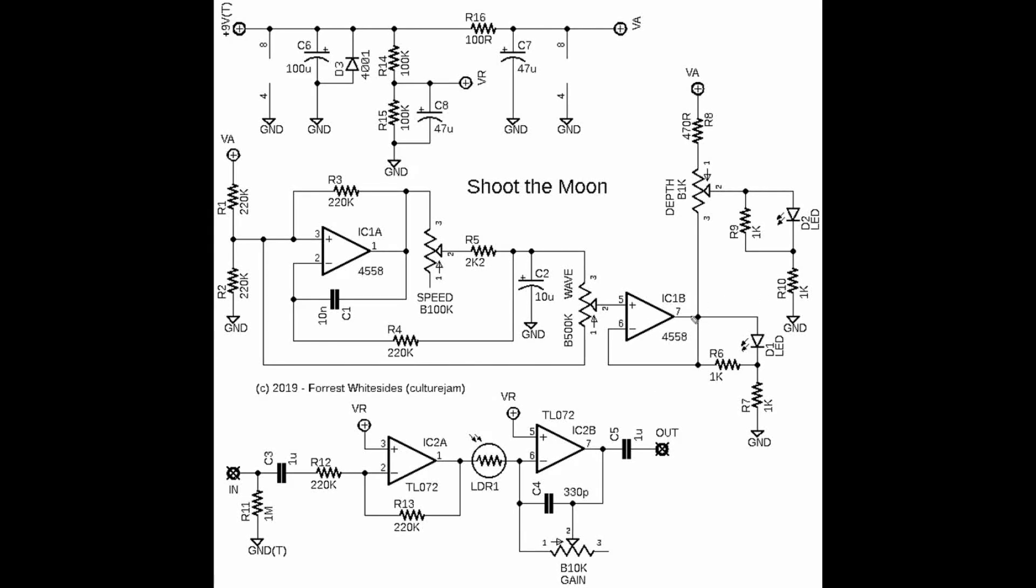Then on the output, we can actually use the output here to drive an LED. This is a rate indicator LED that blinks in time with the LFO so you can see at a glance how fast you're going.